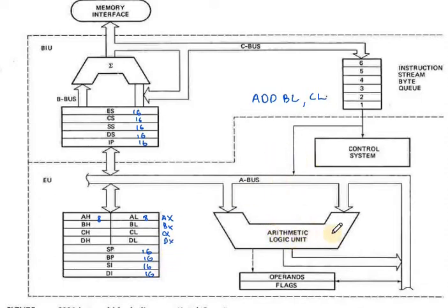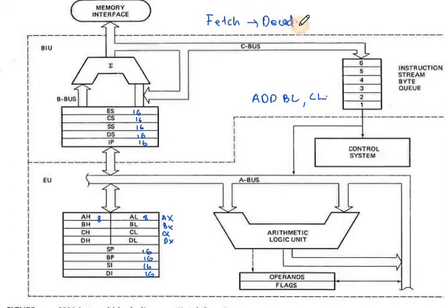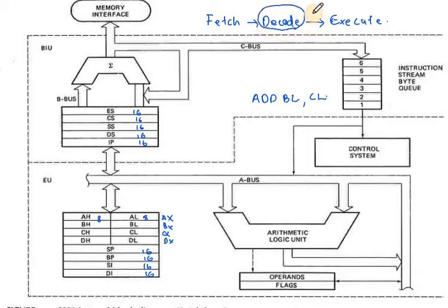Here you can see the Arithmetic Logic Unit. Within the execution unit, we have an instruction cycle consisting of three stages: Fetch, Decode, and Execute. This is the instruction cycle.